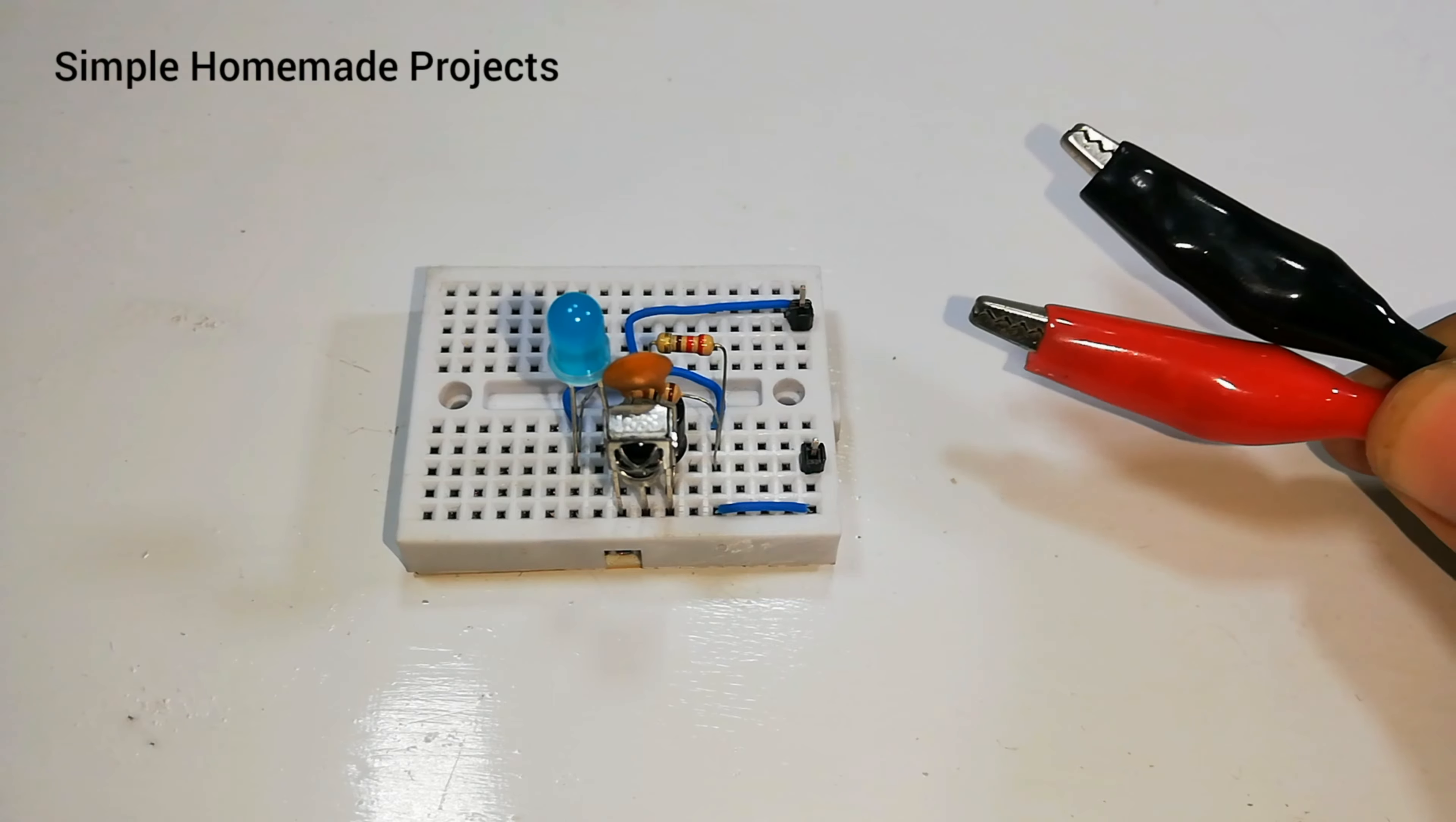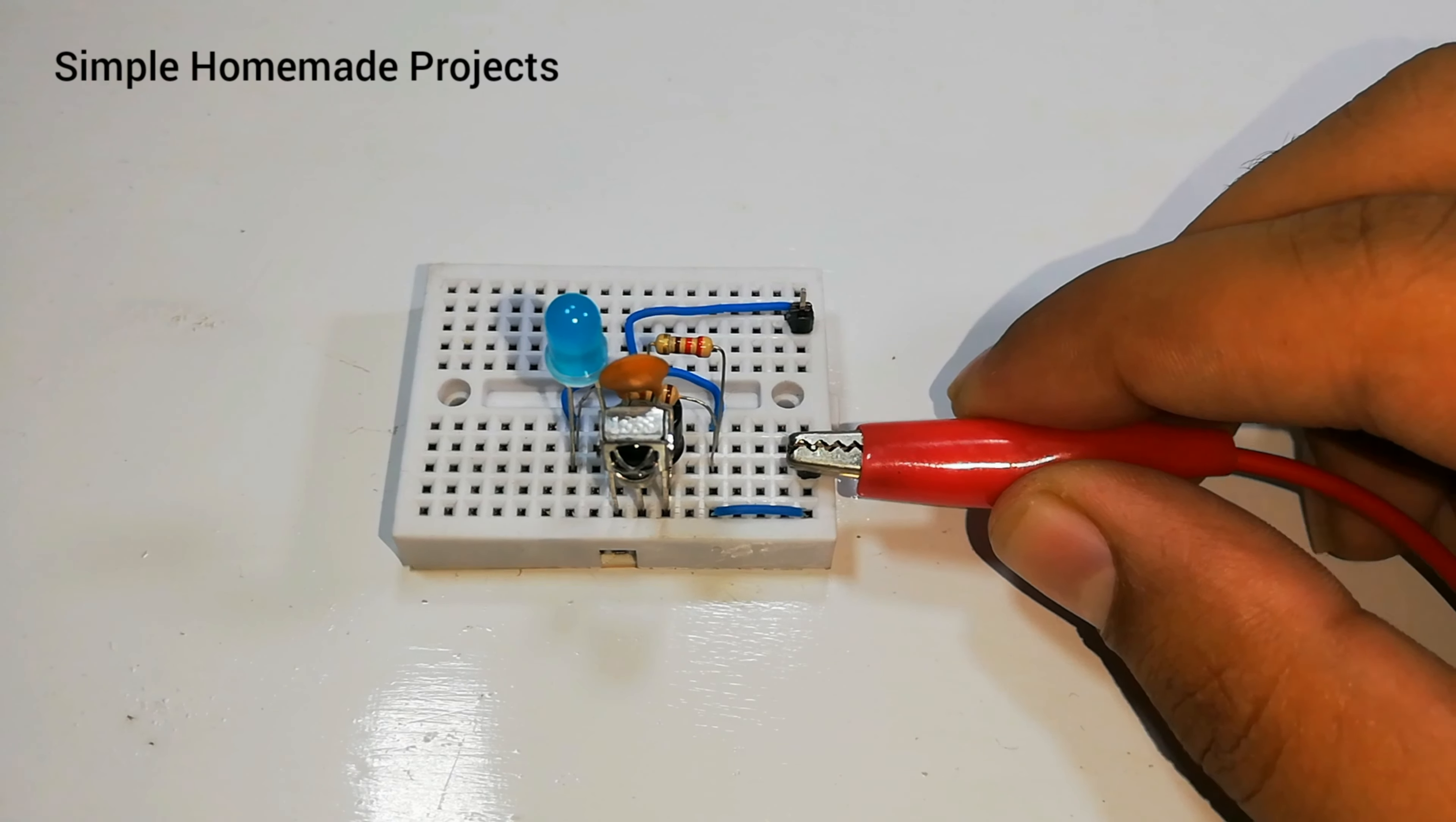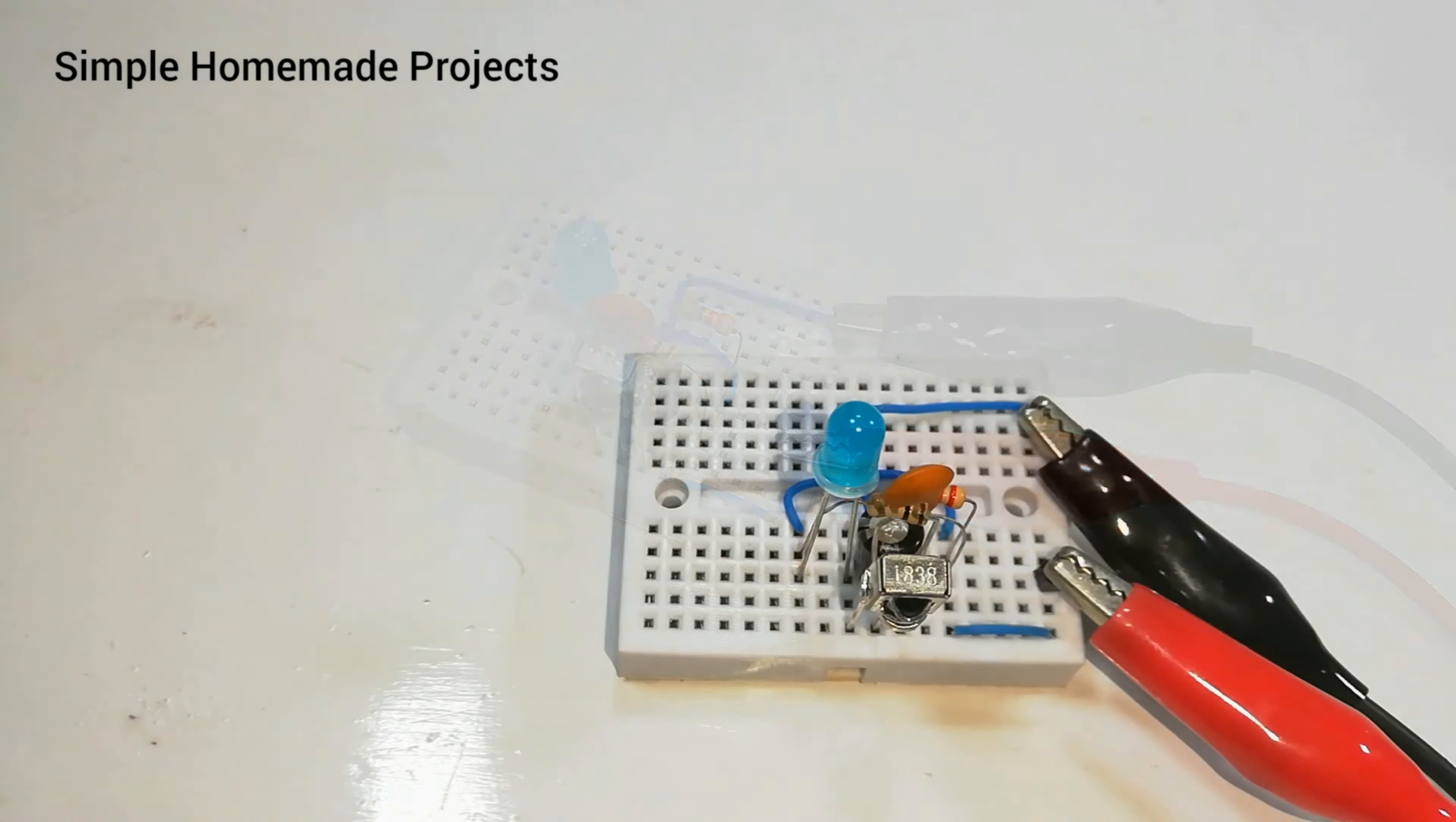Connect a 6 volt supply to it such that junction point of the resistors connects to positive terminal of supply and middle pin to ground. Turn on the switch and our circuit is ready to test.